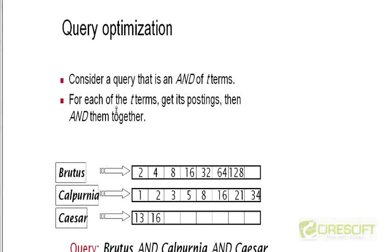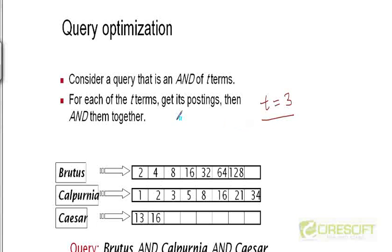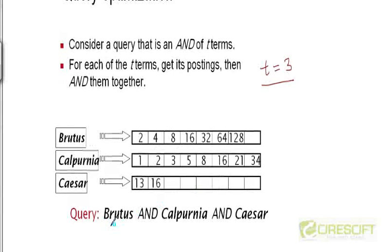Let's take a simple example. Suppose we have a query that is an AND of t terms. Let's say t is equal to 3, so we are taking three terms and ANDing them together. So let's say this query had been Brutus AND Calpurnia AND Caesar.